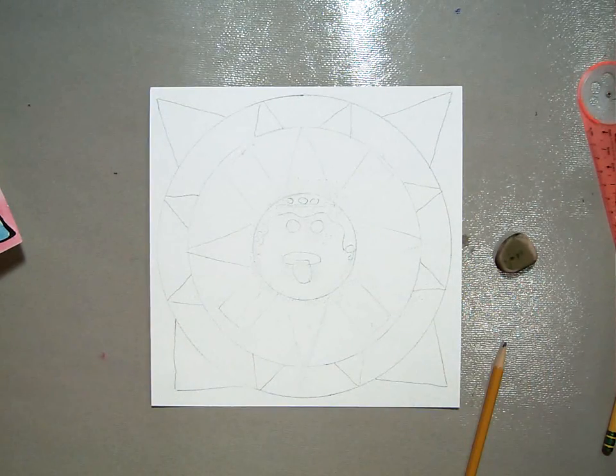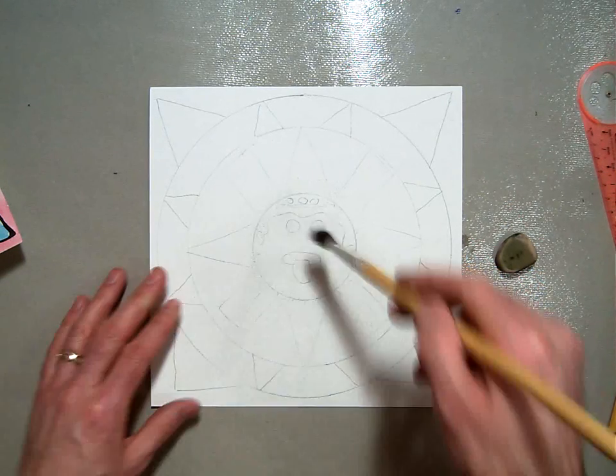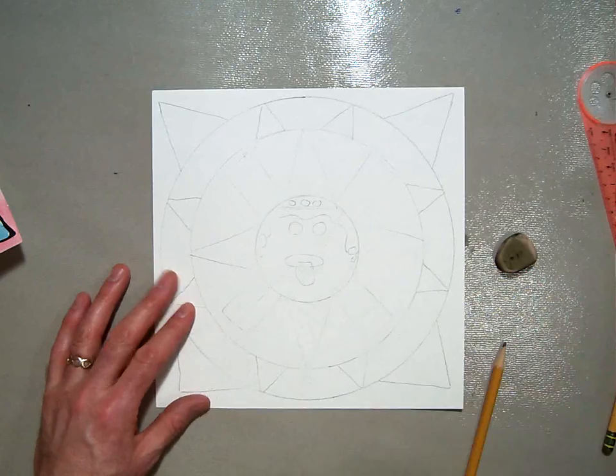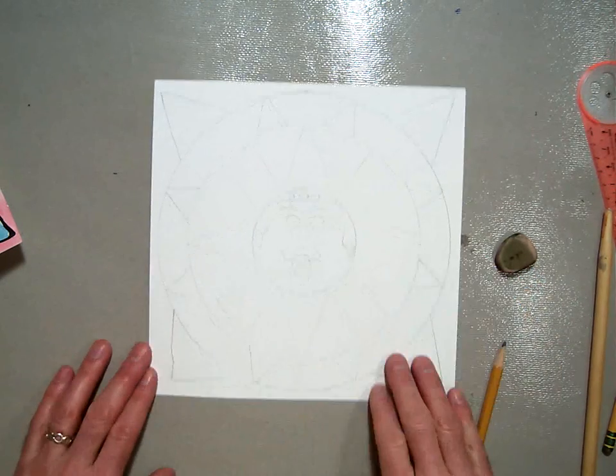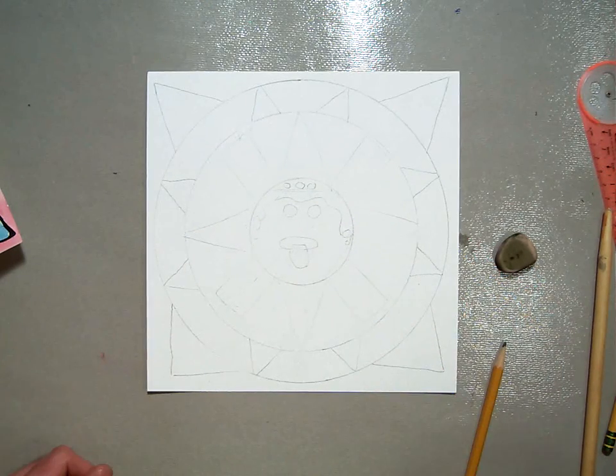Now, once you get your drawing checked off, we'll move on to the next part of the lesson, which is the glue. So that's how you make the drawing for your Aztec calendar stone project.